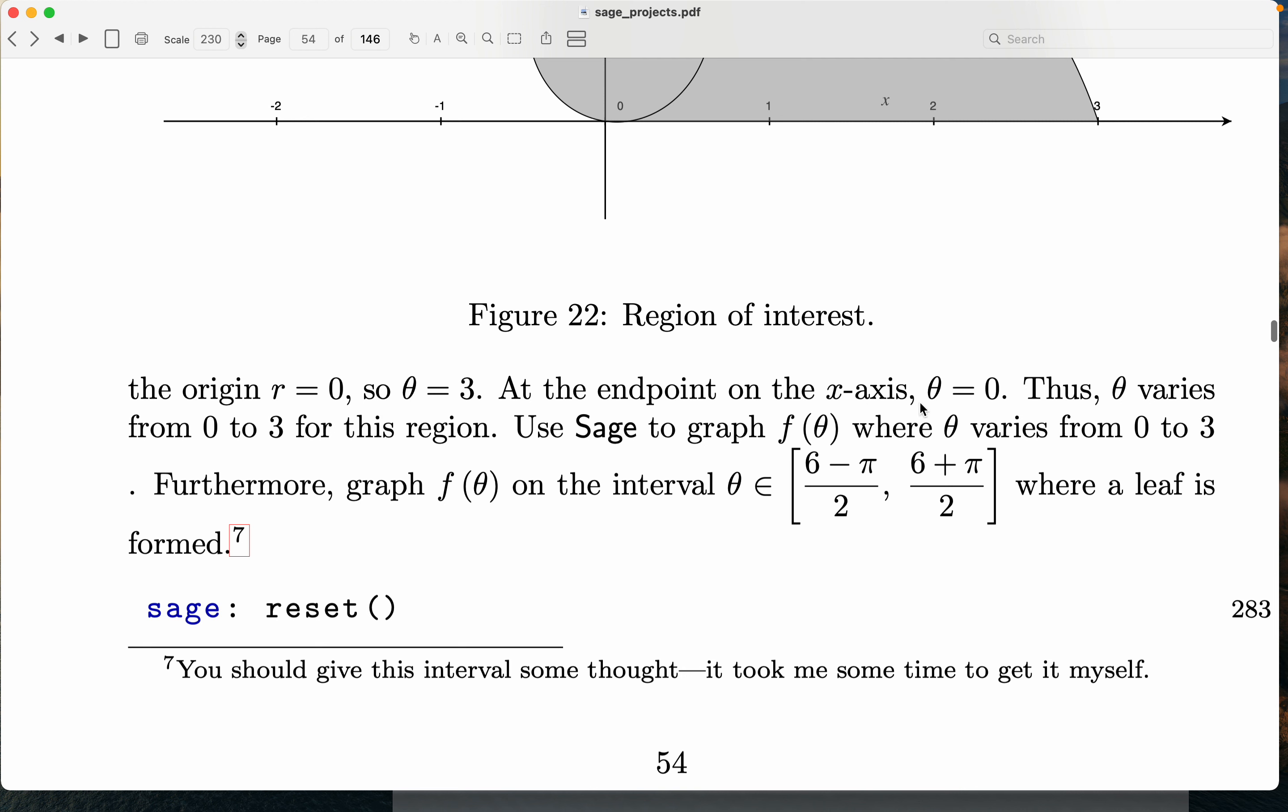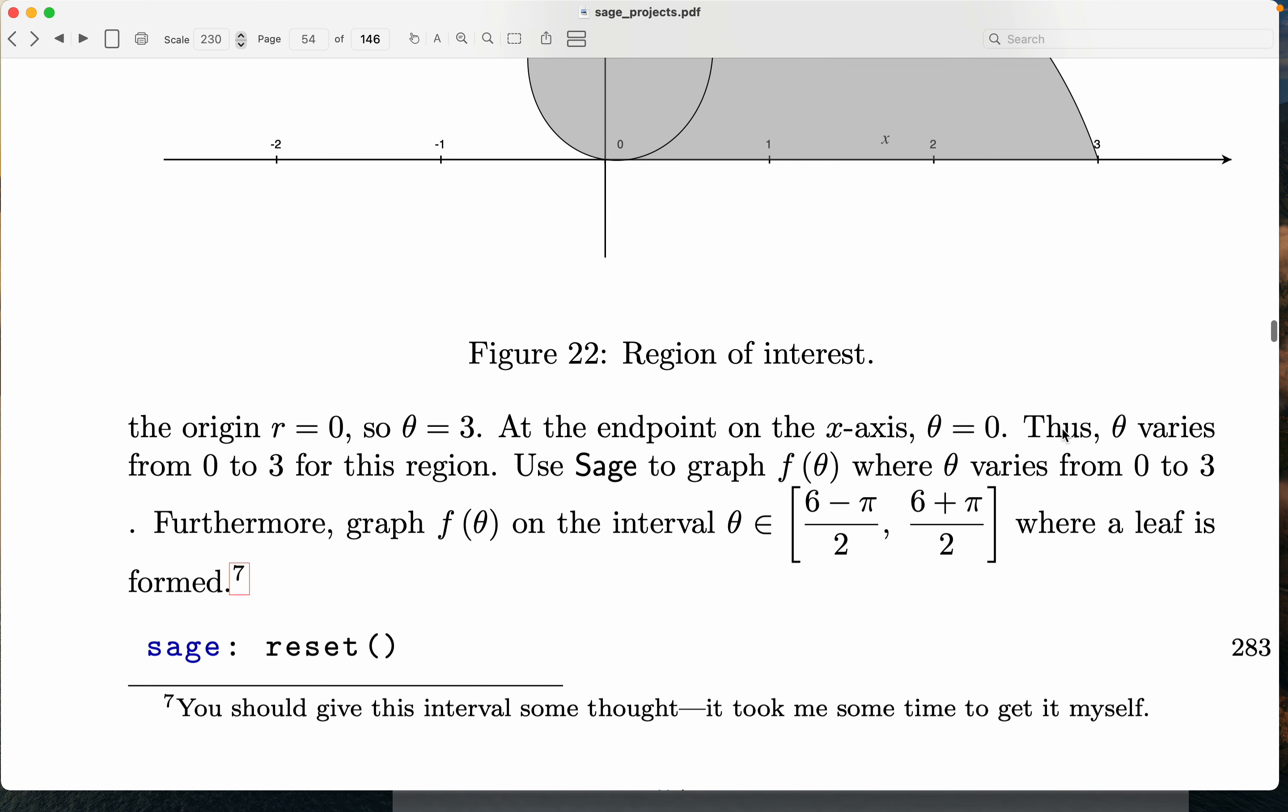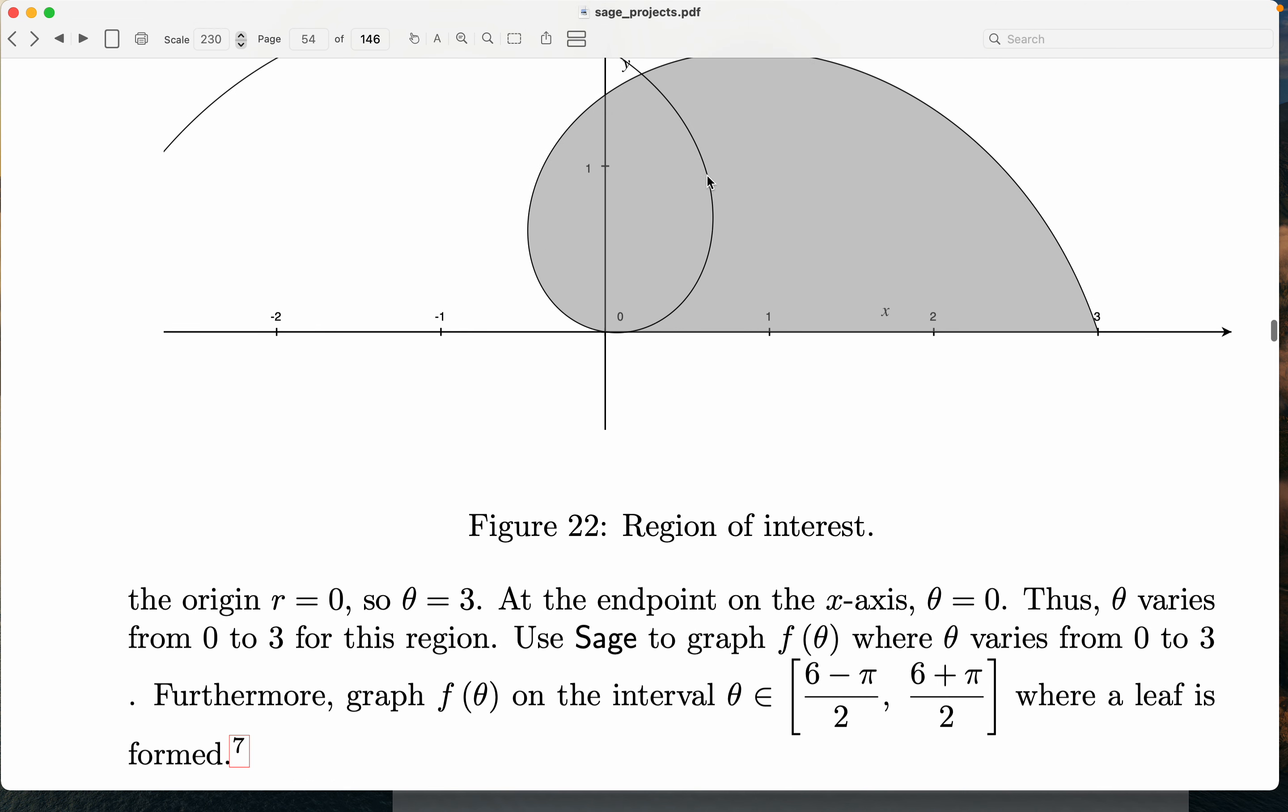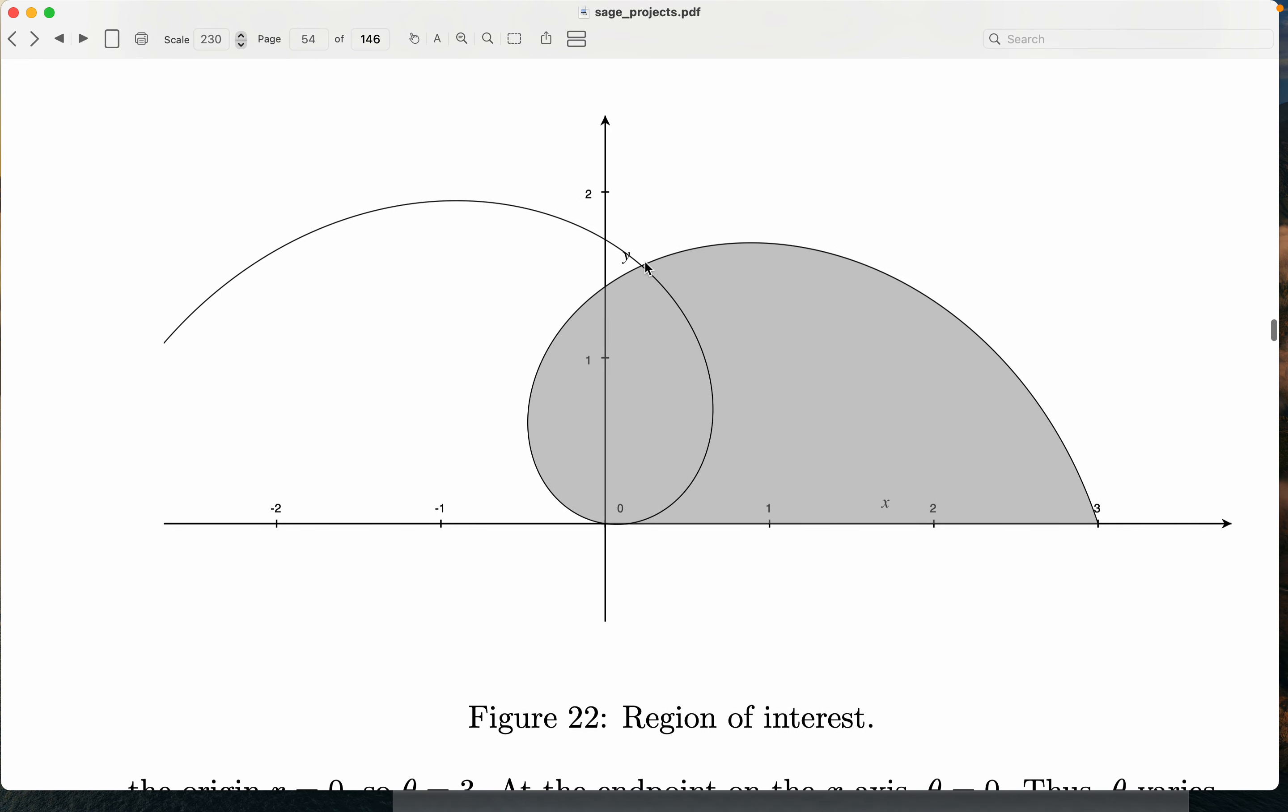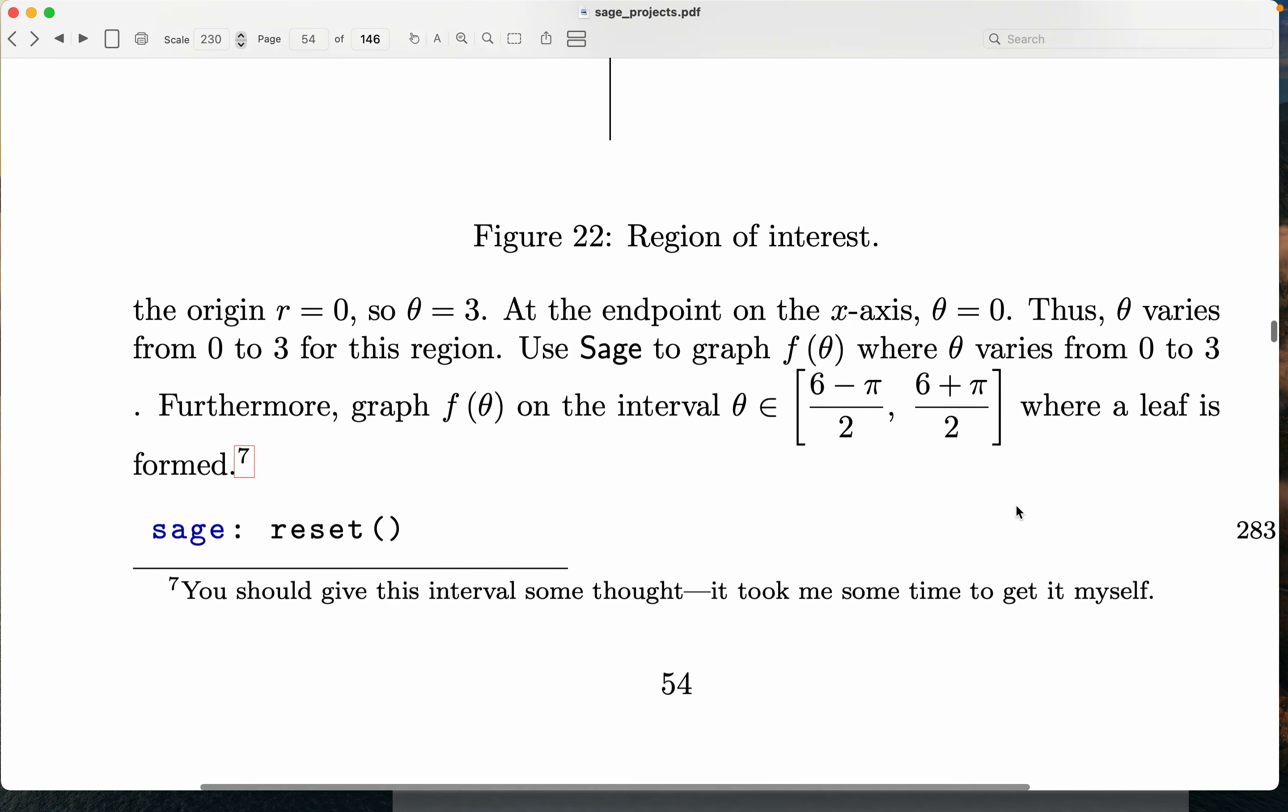All right? So, you know, at the end point, I'm looking at it on the x-axis. You know, theta is equal to 0. All right? And thus, theta varies from 0 to 3 in this region. All right? That's pretty good to know. Use SAGE to graph f of theta, where theta varies between 0 and 3. Furthermore, graph f of theta on the interval, this one over here, where a leaf is formed. And someone says, what's the leaf? I want to point out, this is the leaf over here. And by the way, that's where a lot of students struggle with that. They struggle. They actually struggle with this over here, what the leaf is. But we'll kind of follow it.